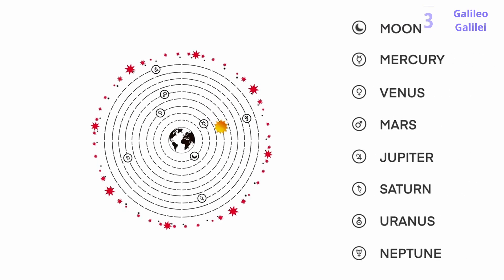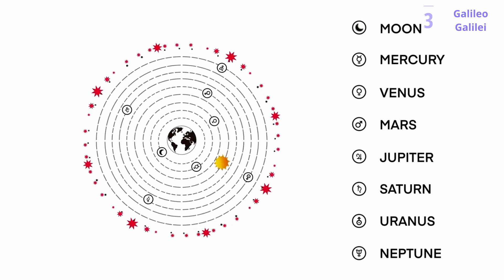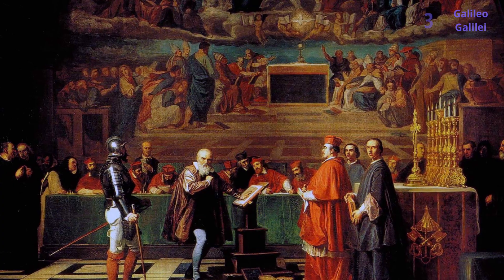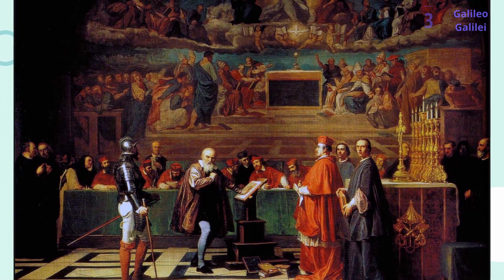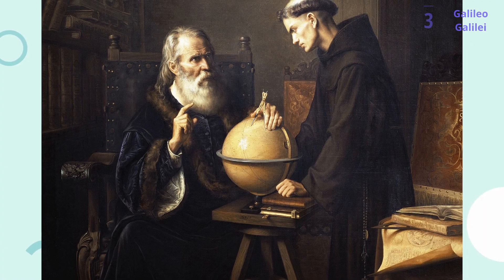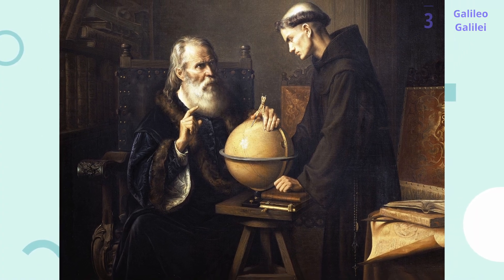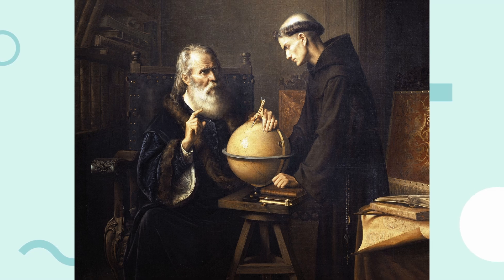Galileo's advocacy for the heliocentric model clashed with the religious beliefs of the time. He faced persecution by the Catholic Church, which ultimately forced him to recant his views. However, his courage in the face of adversity continues to inspire scientists and freethinkers.